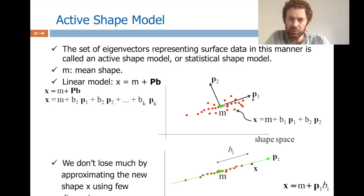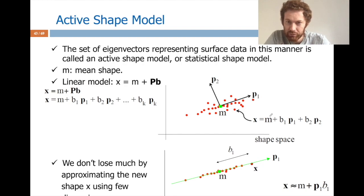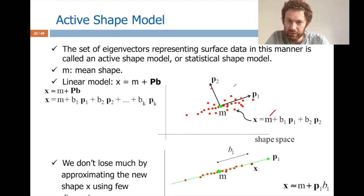I learn the principal axes P₁ and P₂ from PCA. To get a new sample, I start with the mean shape, then go B₁ amount in the first variation direction and B₂ amount in the second. So basically I sample this new shape. The mean shape is at the origin, and the new shape is generated by these weighted principal directions.